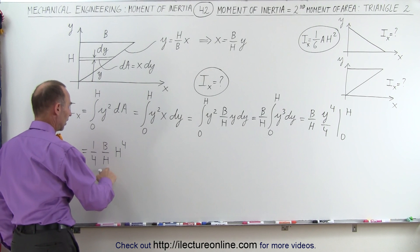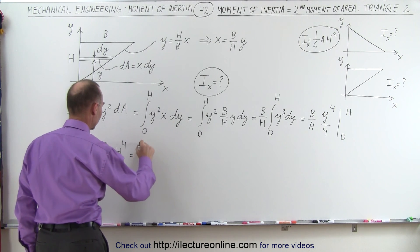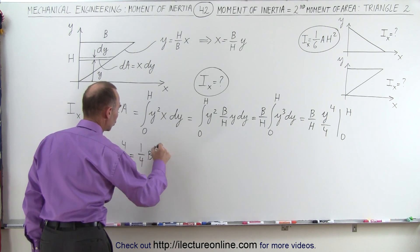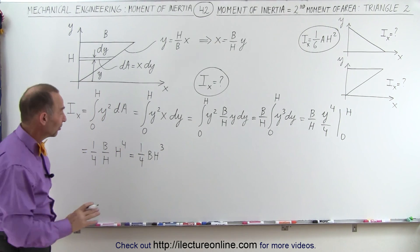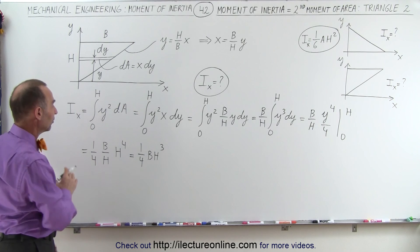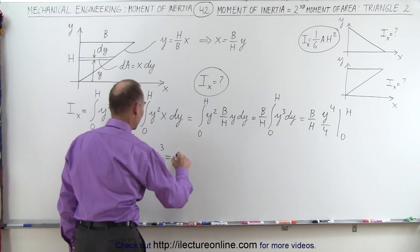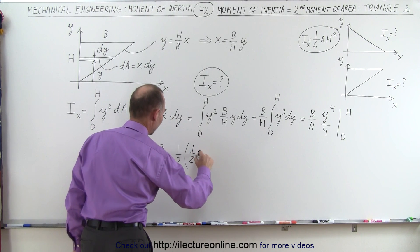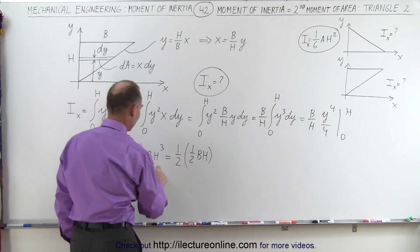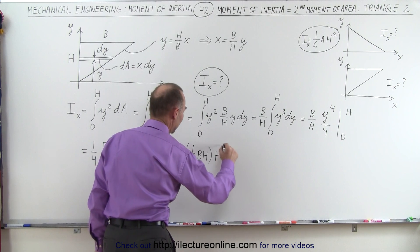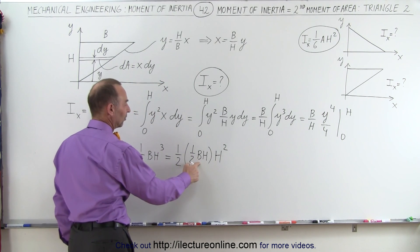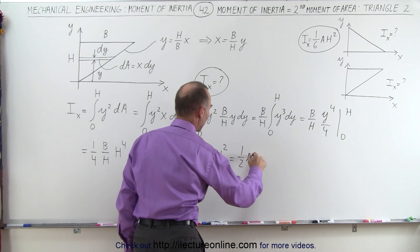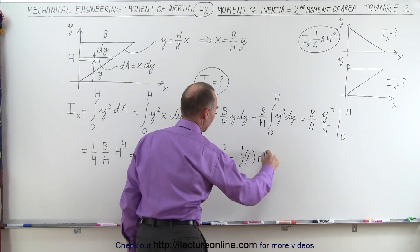Of course, that will cancel out with the h down here. So this becomes 1 quarter b h cubed. And then we realize that the area of a triangle is equal to 1 half the base times the height. So this can be written as 1 half times 1 half the base times the height, and then we still have an h squared left. Since this is the area of the triangle, this is equal to 1 half the area times h squared.